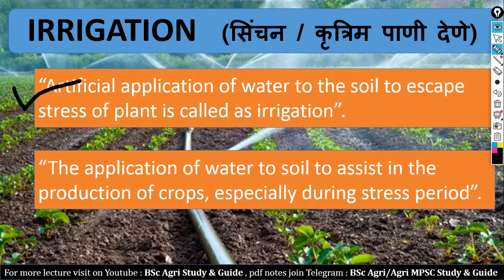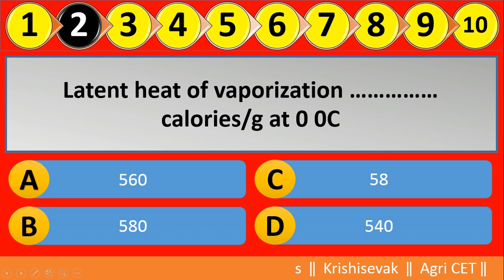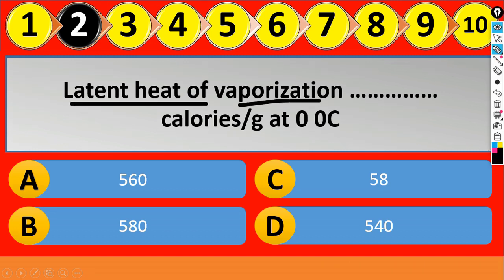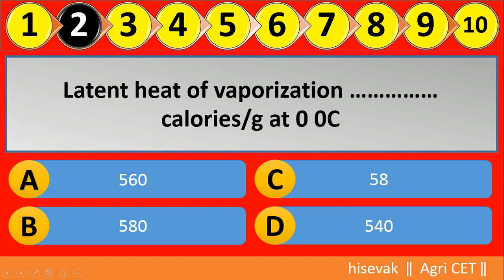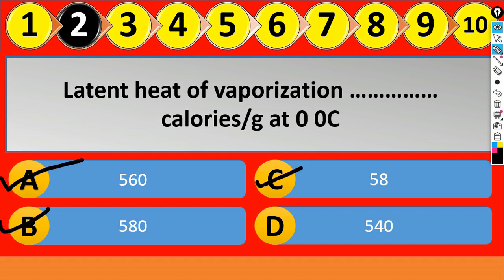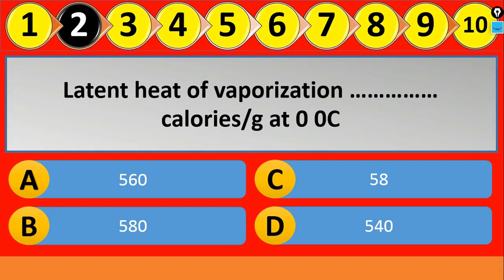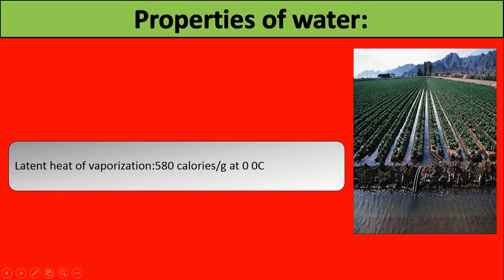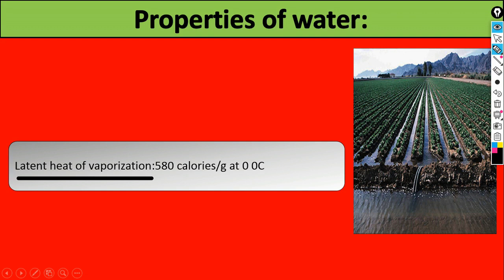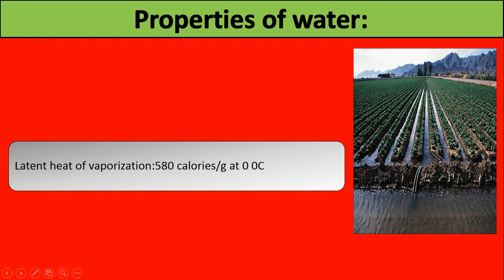Question number two: 'Latent heat of vaporization is ______ calories per gram at zero degree Celsius.' Options are: A) 560, B) 580, C) 58, and D) 540. The right answer is option B — 580 calories per gram at zero degree Celsius. We had studied this in our lecture.